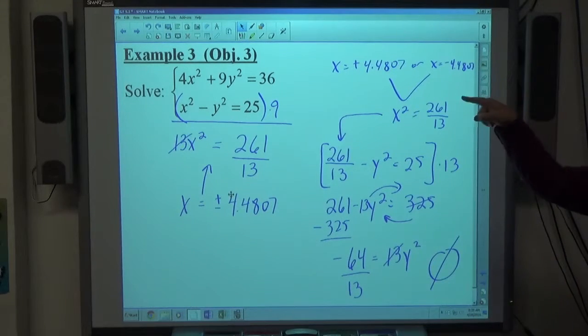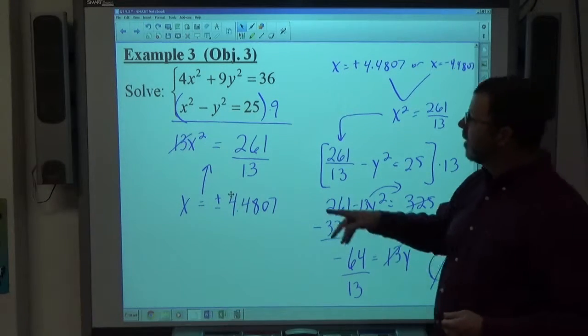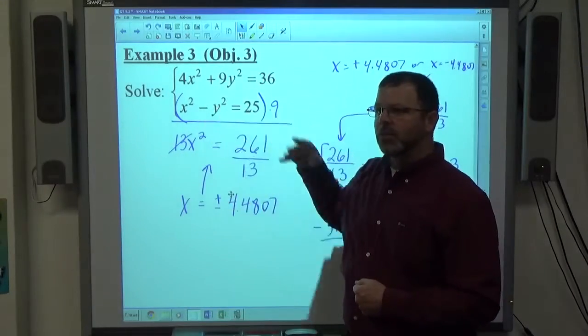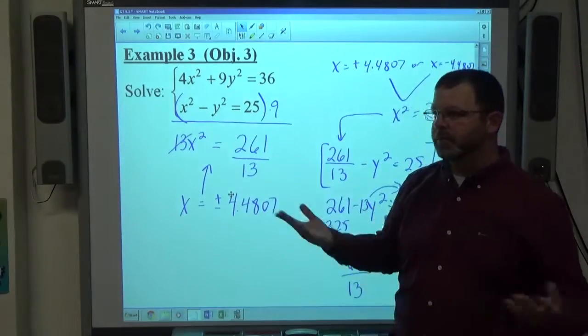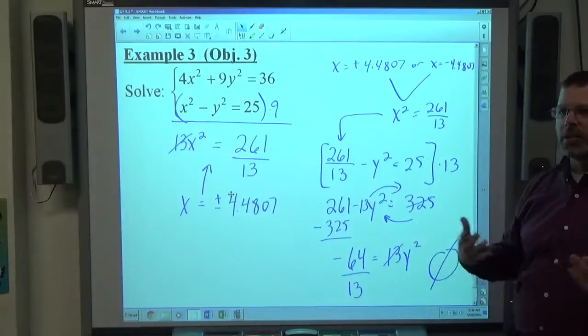Had we eliminated x instead of y, we would have gotten to that much quicker. But we didn't know that up front. If we see the signs are already matched up to cancel, I usually get rid of that one anyway. We were able to get a real x, but not a real y, so we get no answer.